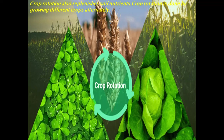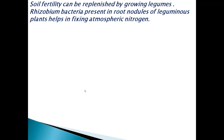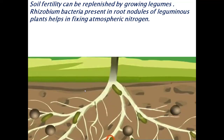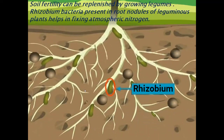Farmers are encouraged to adopt crop rotation. In one season, grow one type of crop; in the next season, grow another type. If cereals are grown in one season, pulses must be grown the next season. Soil fertility can be replenished by growing leguminous plants.